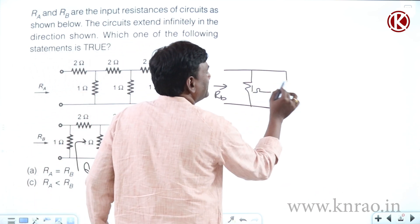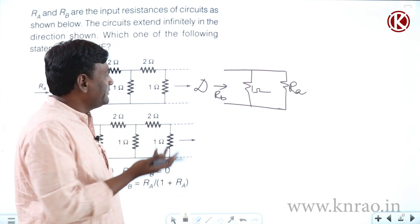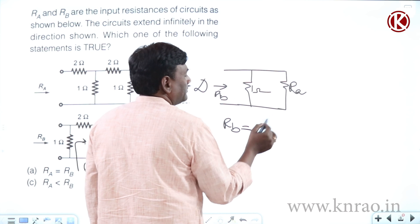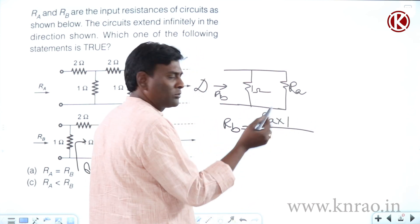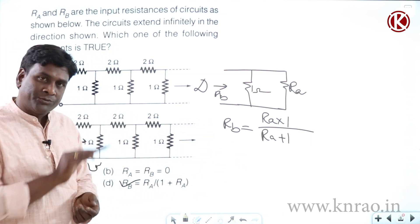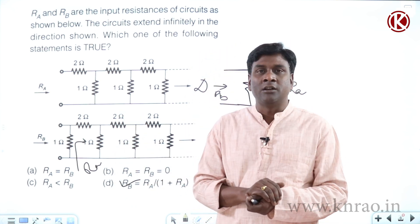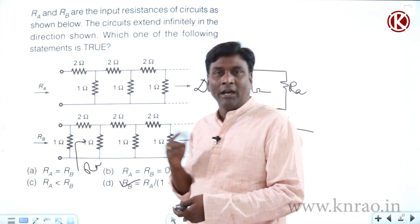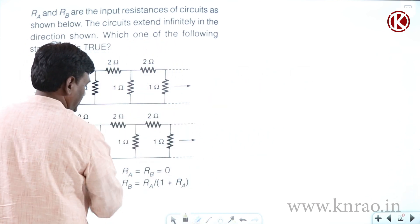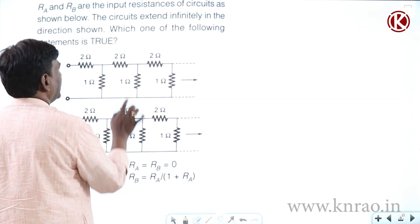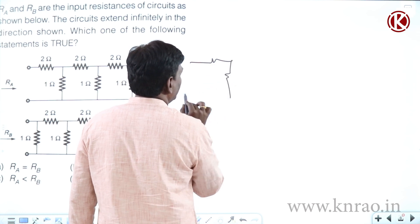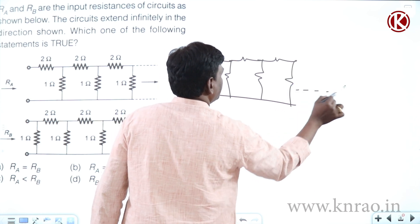So across this portion it's Ra. Now Rb is 1 ohm in parallel with Ra. So Rb = Ra × 1 / (Ra + 1), meaning Ra parallel with 1 gives Rb. Problem solved — this question is solved. For example, if they give only this circuit and ask you to find R_eq, let us see how to solve it.